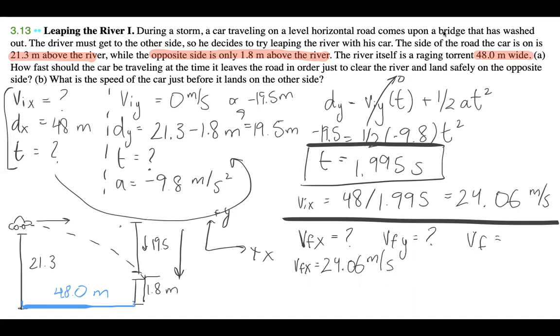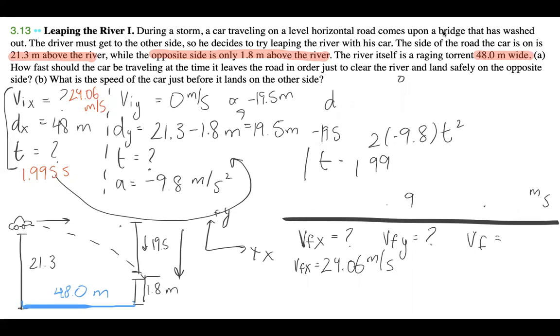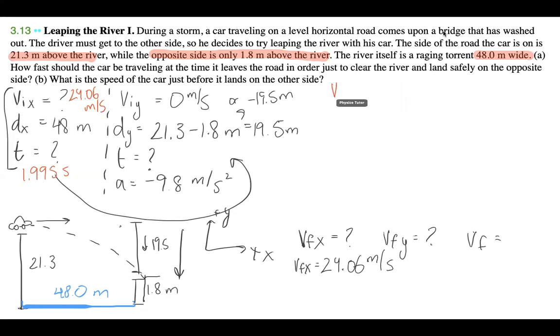I'm going to go ahead and write down our t that we calculated, so 1.995 seconds. And then our vx, we said it was 24.06 meters per second. I'm going to go ahead and erase this part just so that we have more space to do our question. So our vfx is equal to 24.06 meters per second, and we're looking for our vfy.